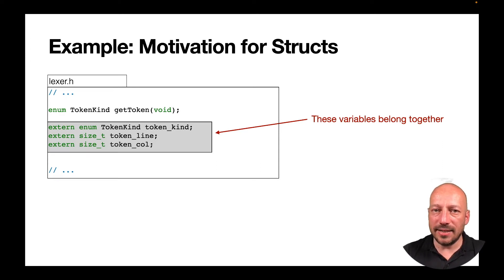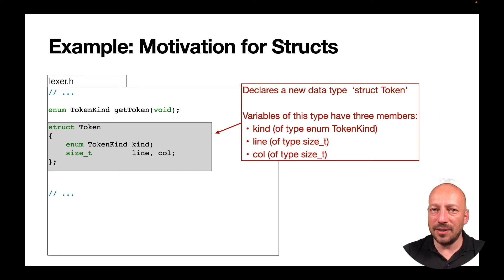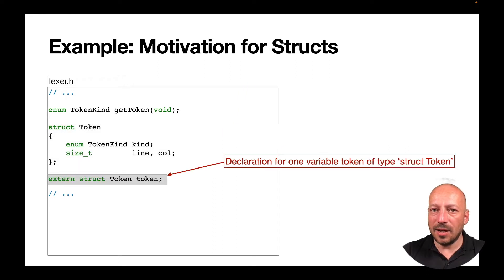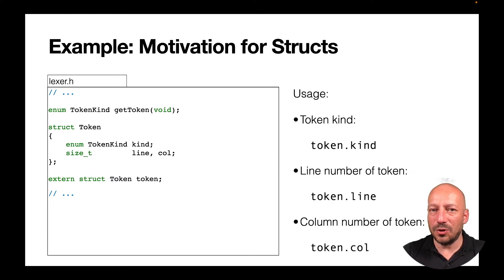With structs, we can use a language feature to express that these variables belong together instead of a coding style convention. We can declare a new data type, struct token, and specify that variables of this type always have three members: kind, line, and column. Then we declare just one variable token of this type, which has three members accessed with the notation: name of variable dot name of member.